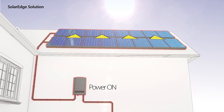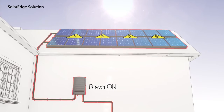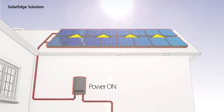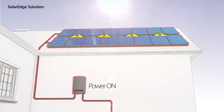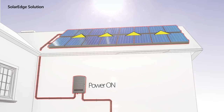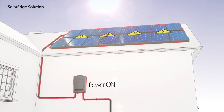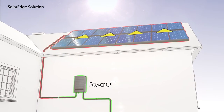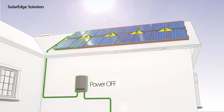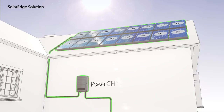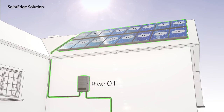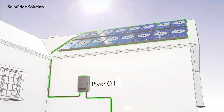In addition, we have incorporated panel-level safety mechanisms to protect installers, electricians, and firefighters. With the SolarEdge solution, whenever AC power is off, the string's DC high voltage is automatically reduced to a safe voltage. This solution meets new safety regulations in all significant PV markets around the world, as well as the 2014 National Electric Code in the U.S.